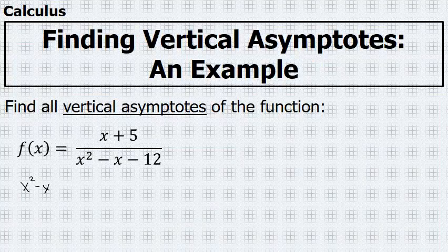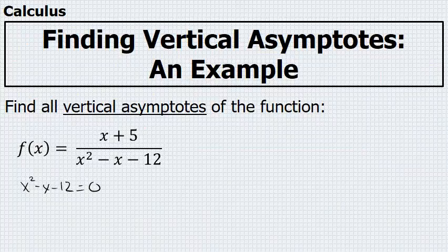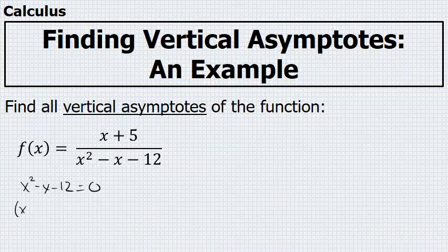the denominator is x² - x - 12, and if I set that equal to 0, I can solve it with a quadratic formula, but a simpler method would be to factor this.